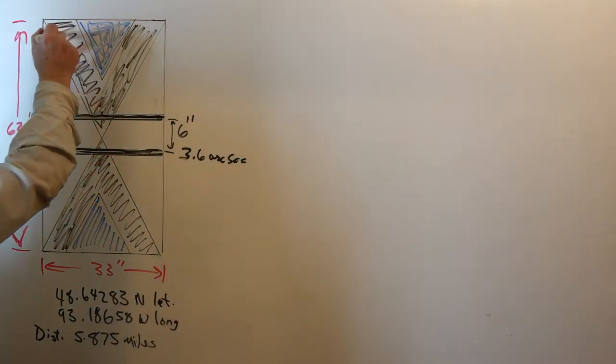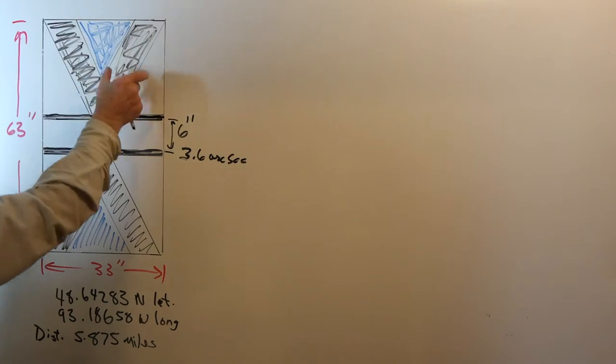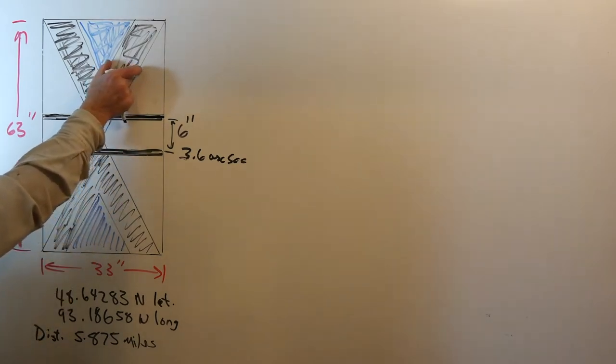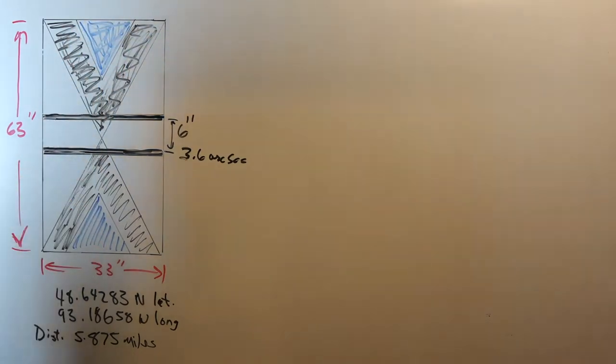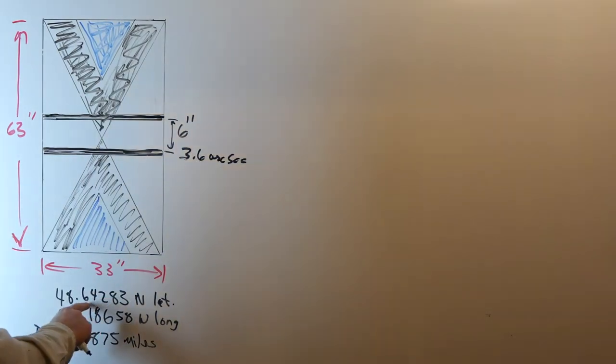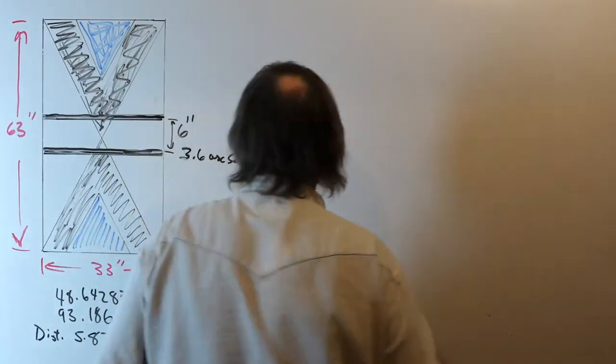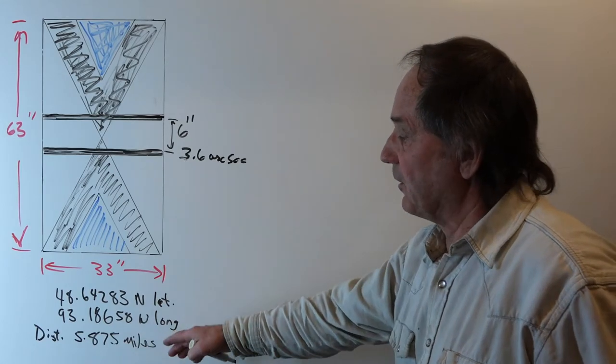The target is configured with these two triangles, an upper and lower triangle. There's a black portion outline of each of the two triangles which is seven and a half inches wide, and then a smaller blue triangle in the center. This target was deployed at 48.64283 degrees north latitude by 93.18658 west longitude at a distance of 5.875 miles from the auto level reference point. Now I'll just call it the six mile target.